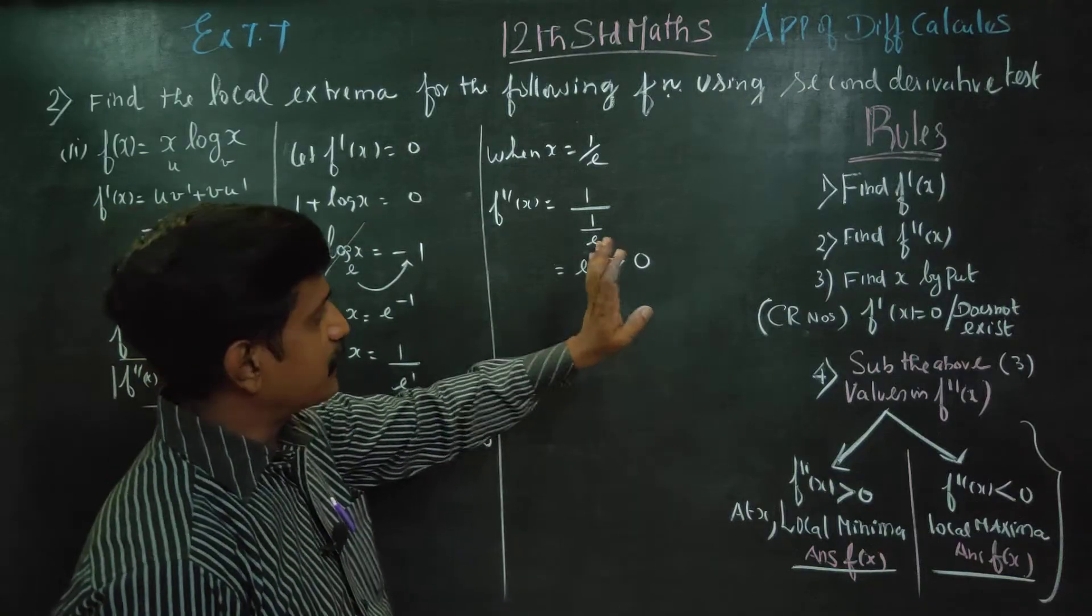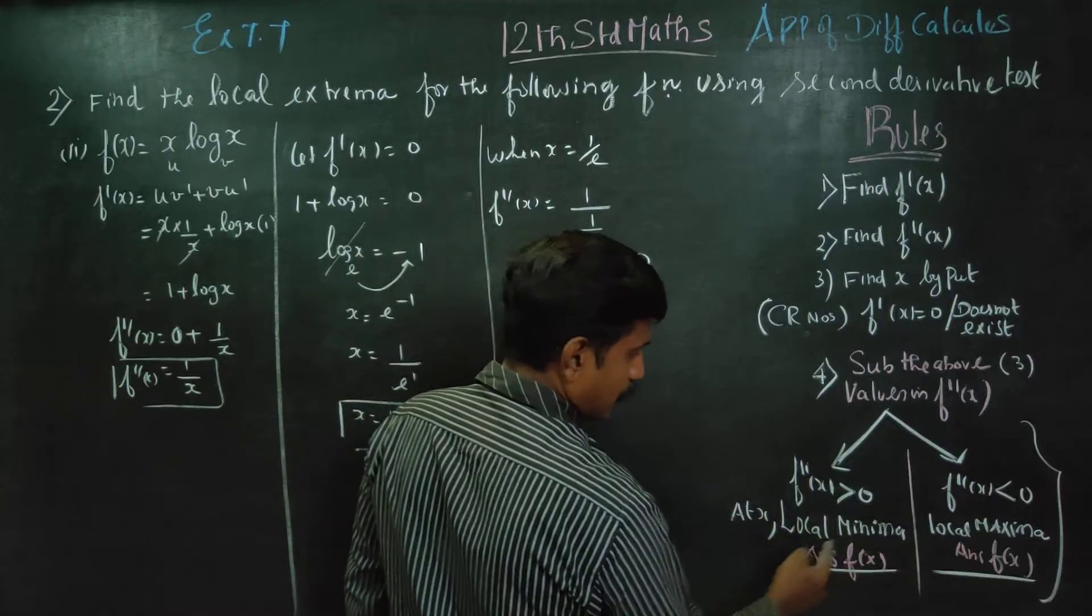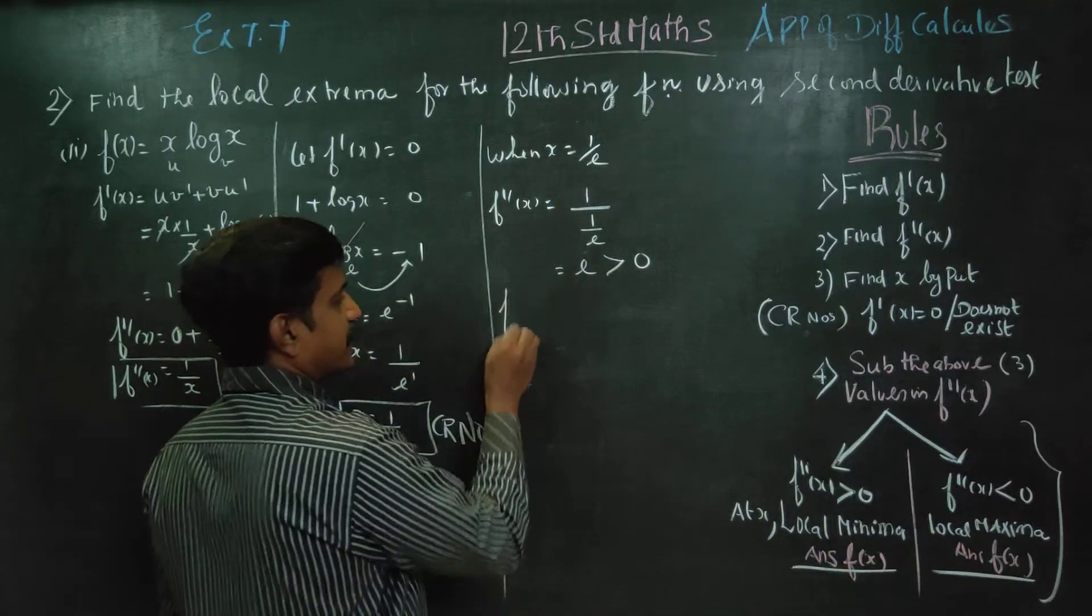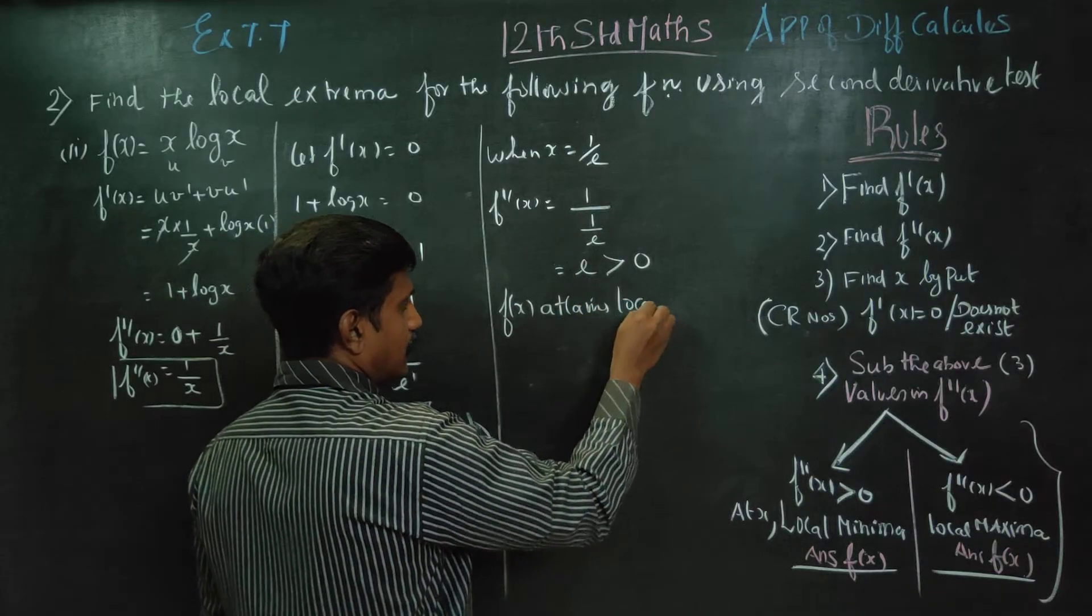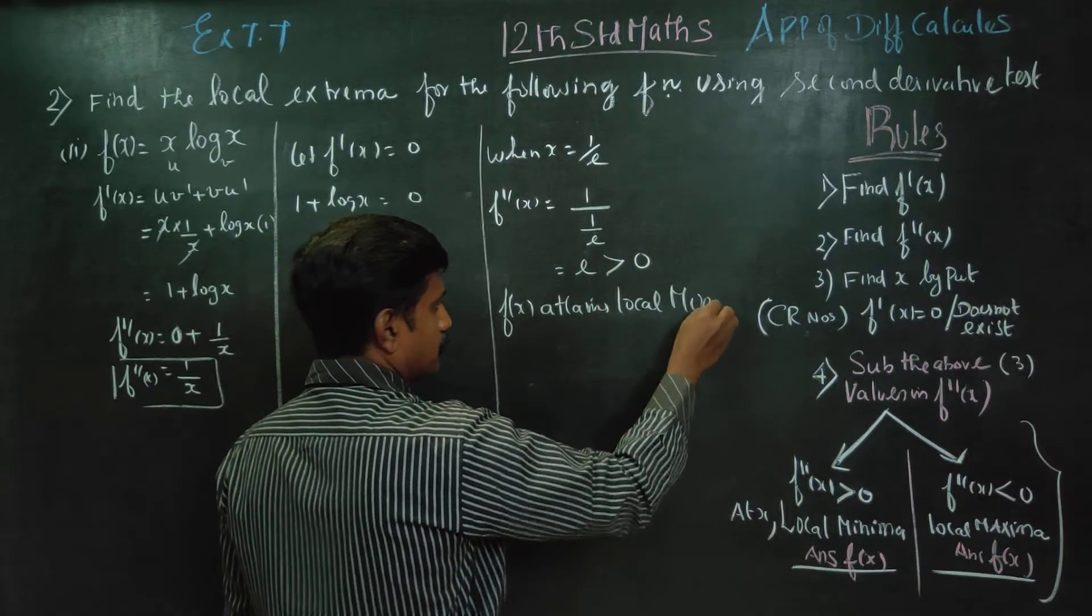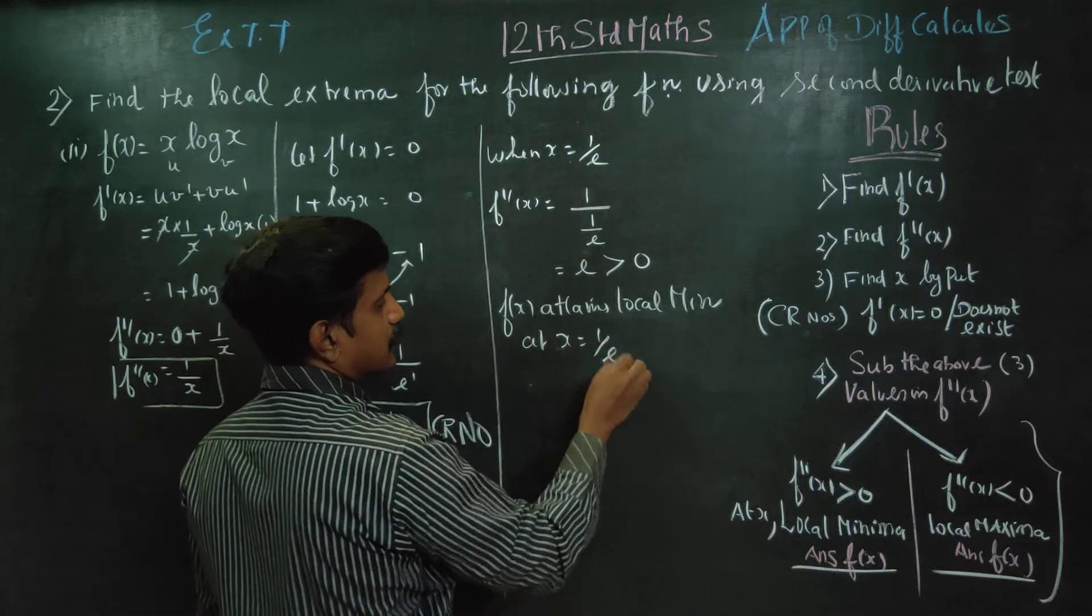Since e is greater than 0, f''(1/e) is positive. Therefore f(x) attains a local minimum at x = 1/e.